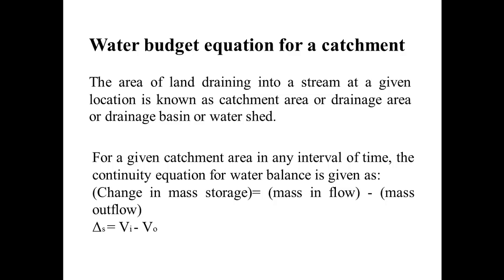For a given catchment area in any interval of time, the continuity equation for water balancing is given as: change in mass storage equals mass inflow minus mass outflow. The change in mass storage is denoted by delta S, mass inflow is denoted by Vi, and mass outflow is denoted by V-naught.